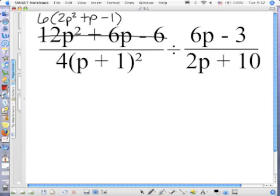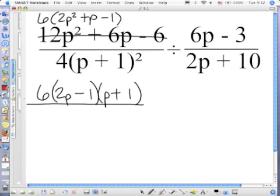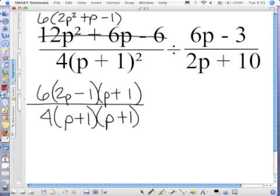So now, factoring that, I have 6 times 2P and P, 1 and 1, minus and plus. In the denominator, I'm going to write P plus 1 twice, just because I want to make sure that I visually see what is there.